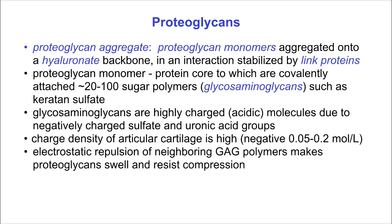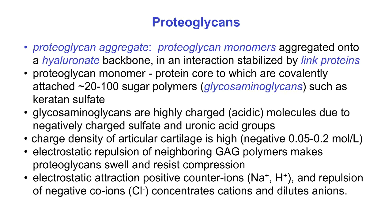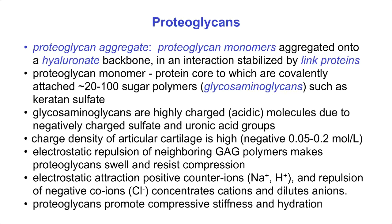Electrostatic repulsion of neighboring GAG polymers makes proteoglycans swell and resist compression. Electrostatic attraction of positive counter-ions, such as sodium and protons, and repulsion of negative co-ions like chloride concentrates the cations and dilutes the anions. This ionic gradient creates an electrical potential known as the Donnan potential that contributes to osmotic swelling. Proteoglycans thereby promote compressive stiffness and hydration of the tissue.